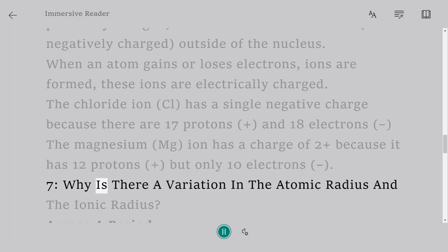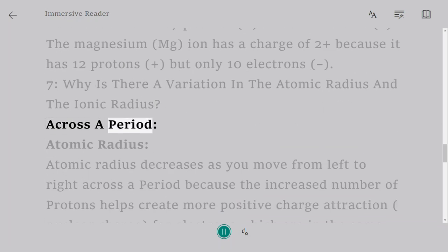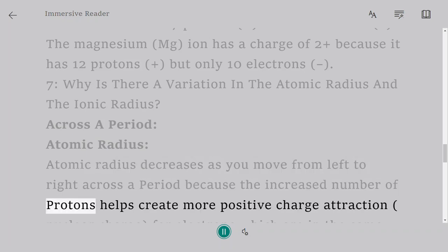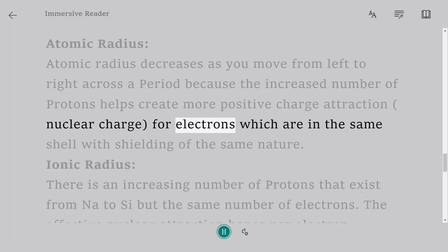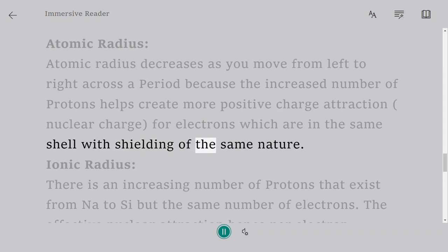7. Why is there a variation in the atomic radius and the ionic radius? Across a Period. Atomic Radius: Atomic radius decreases as you move from left to right across a period because the increased number of protons helps create more positive charge attraction (nuclear charge) for electrons, which are in the same shell with shielding of the same nature.